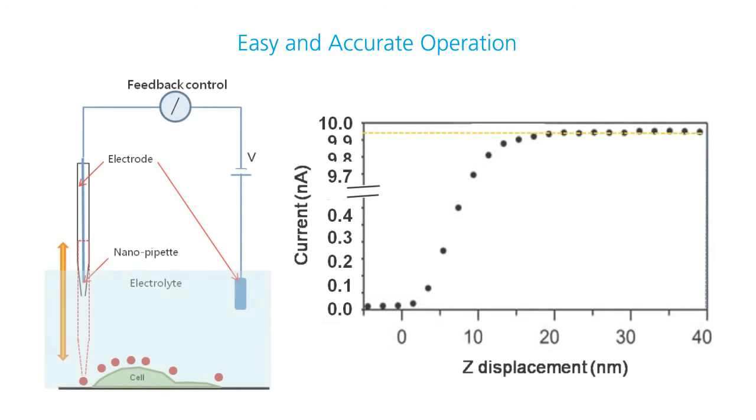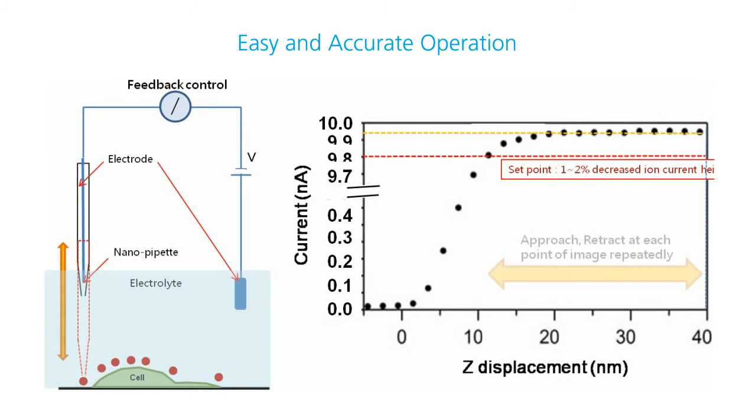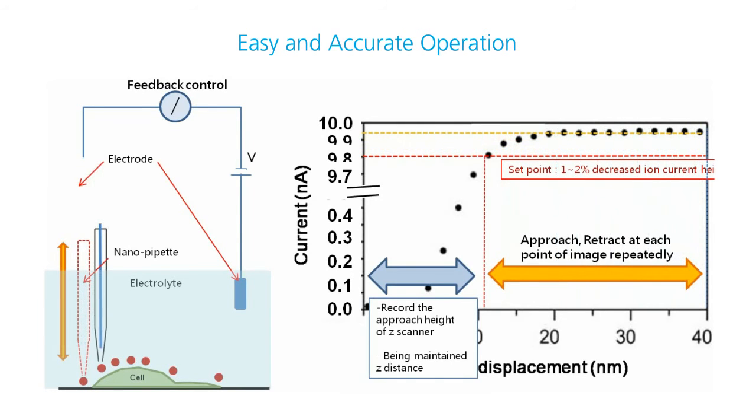In ARS mode, the nanopipet will approach and confirm the sample's position. Then it will be retracted so that its reference current can be refreshed and scanned pixel by pixel.